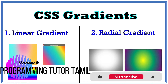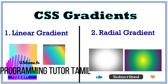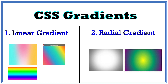CSS Gradient — the CSS3 version of the gradient concept. The gradient concept is used to create a new color look. Gradient means a gradual transition from one color to another color.